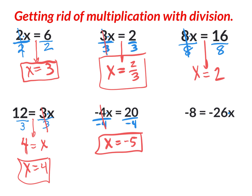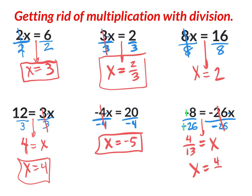So I get rid of the multiplication of negative twenty-six by dividing by negative twenty-six on both sides. This cancels out, the equal sign comes down, and I have x all by itself. Negative eight divided by negative twenty-six — a negative divided by a negative is a positive, so the answer is positive. Eight can't be divided evenly by twenty-six, but both are even so I can reduce by two: eight divided by two is four, twenty-six divided by two is thirteen. The answer is x equals four over thirteen.